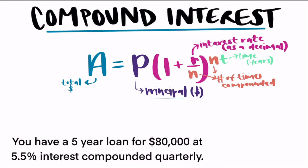So how we would do this is we first want to start with P, our principal, which it says our money is $80,000.